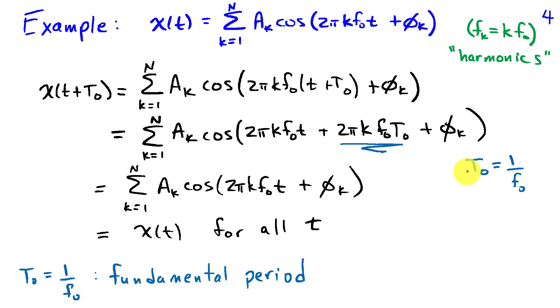So if I choose again t naught to be equal to 1 over f naught, then my phase shift is 2 pi k and that's going to lead to an equivalent expression a k sum cosine 2 pi k f naught t plus phi k, which is what we started with as x of t.